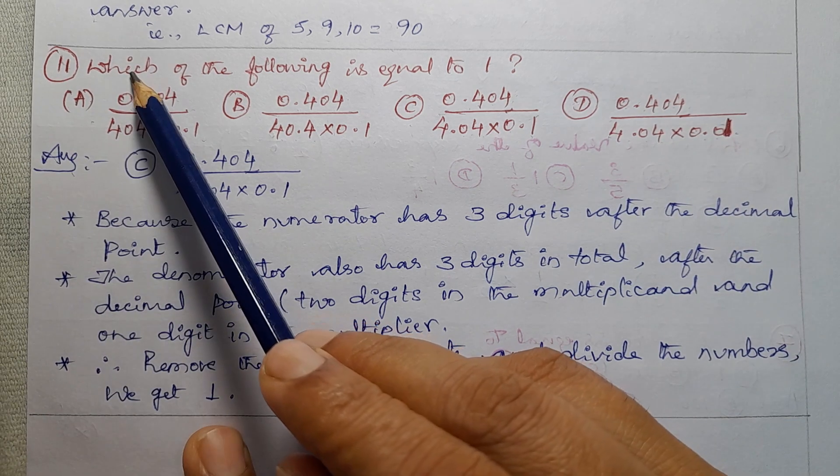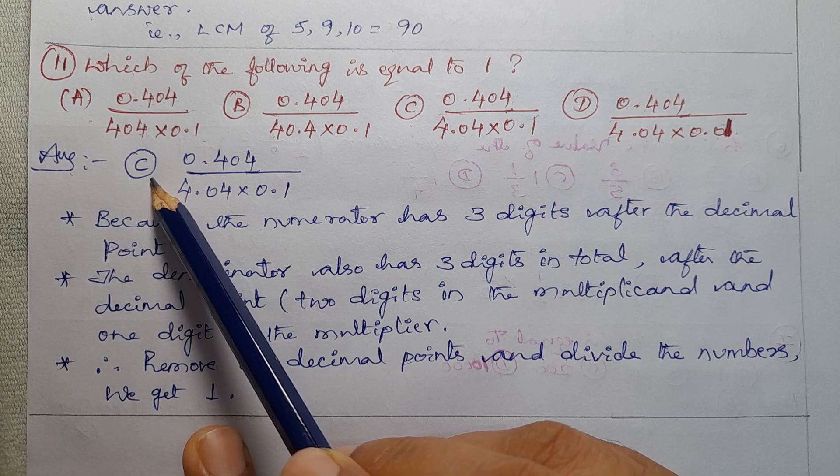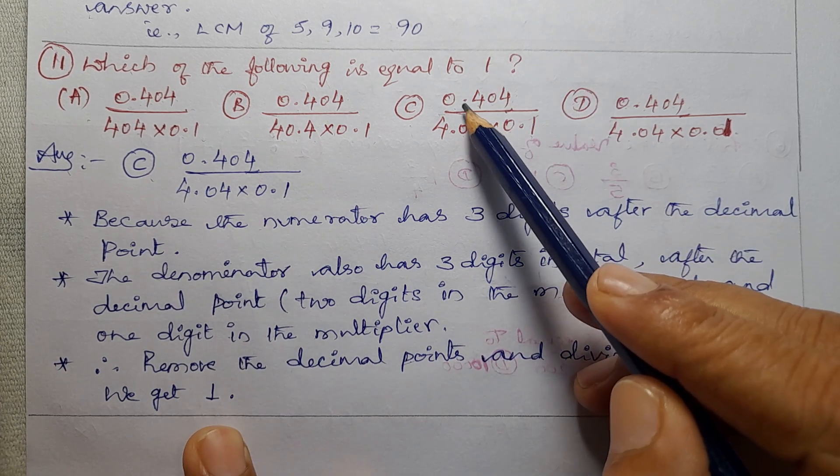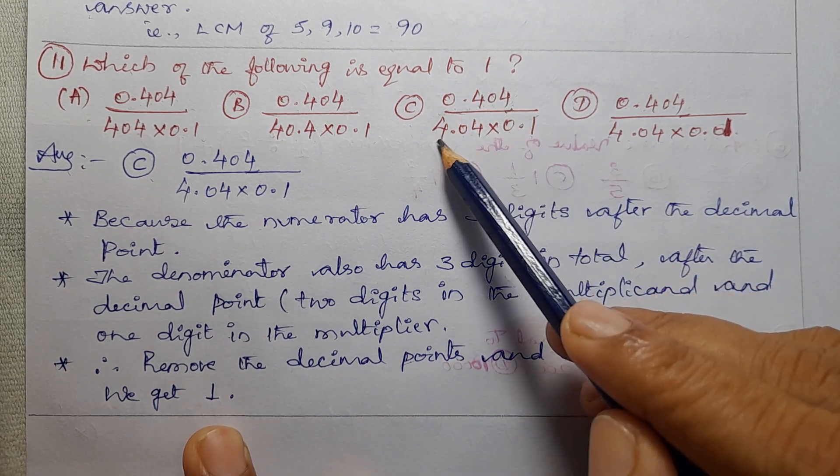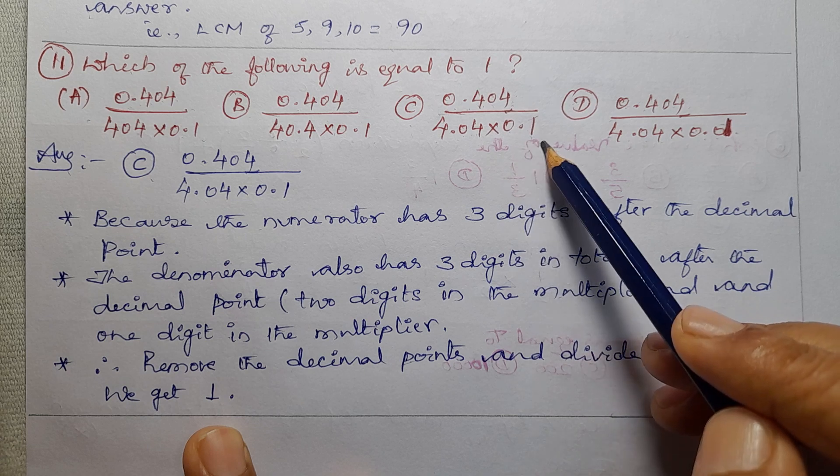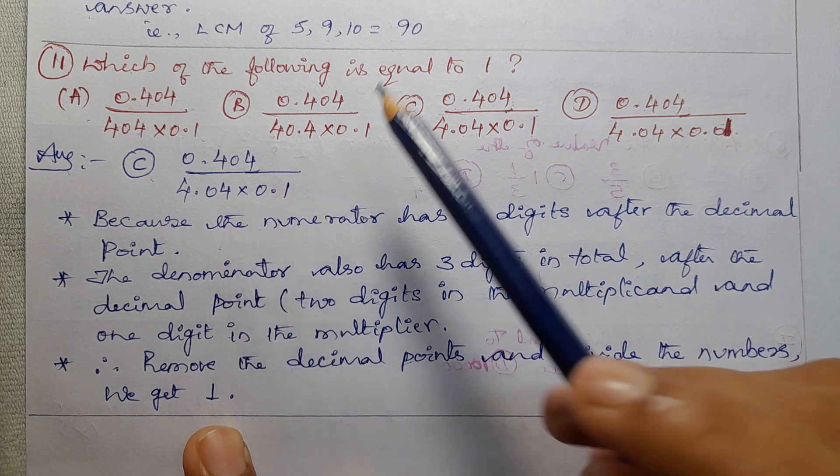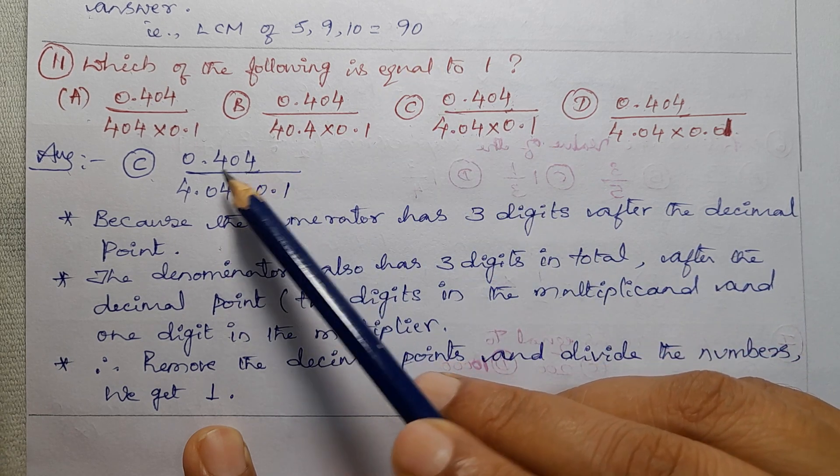So, the answer for this question is Option C, the correct answer. That is 0.404 divided by 4.04 into 0.1.